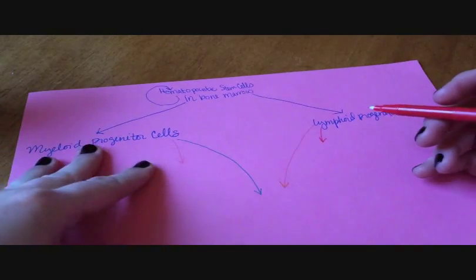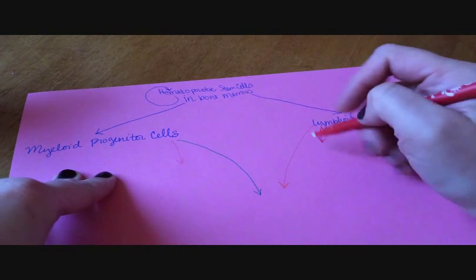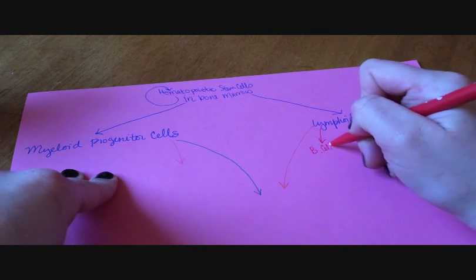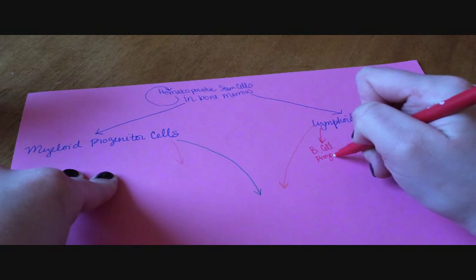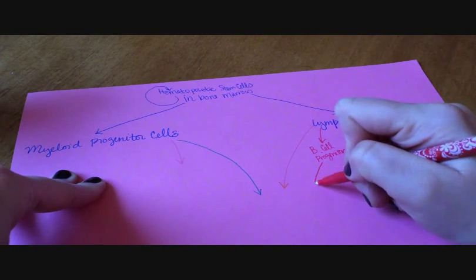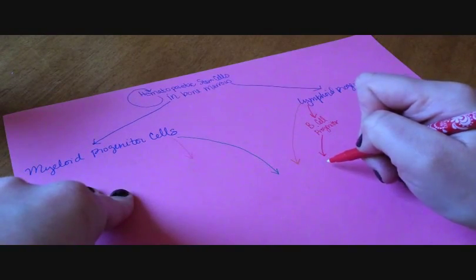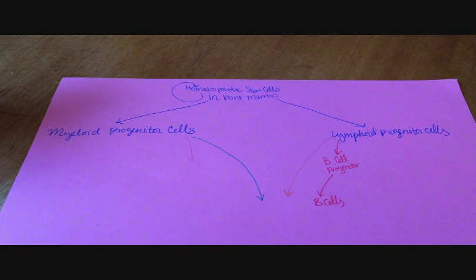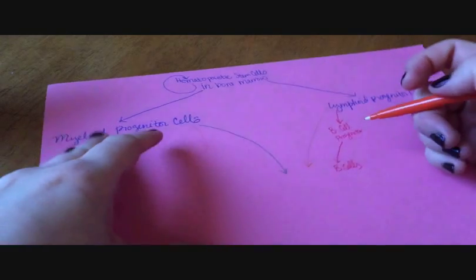Let's start here. Lymphoid progenitor cells can differentiate. One of the things they differentiate into is B-cell progenitors, which then differentiate into B-cells.